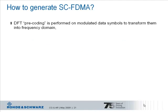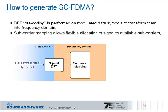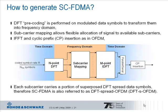How is a single-carrier FDMA signal generated from a high-level perspective? First, there is an additional block in the signal processing chain. A Discrete Fourier Transform is performed on the data symbols after serial-to-parallel conversion, which transfers them from the time into the frequency domain. Afterwards, there is subcarrier mapping as in OFDM and an IFFT to transfer the signal back into the time domain. After the parallel-to-serial conversion, the cyclic prefix is inserted. The last two blocks are the same as for OFDM.